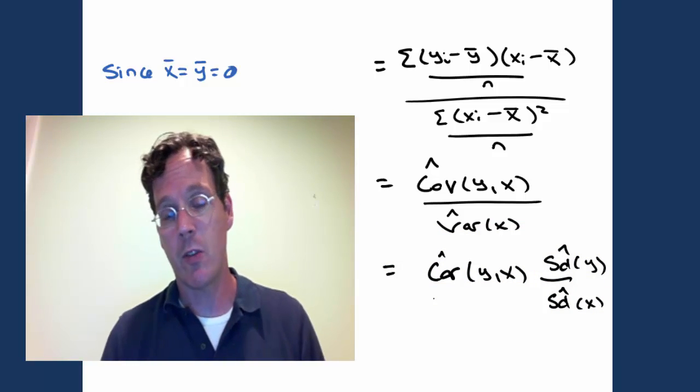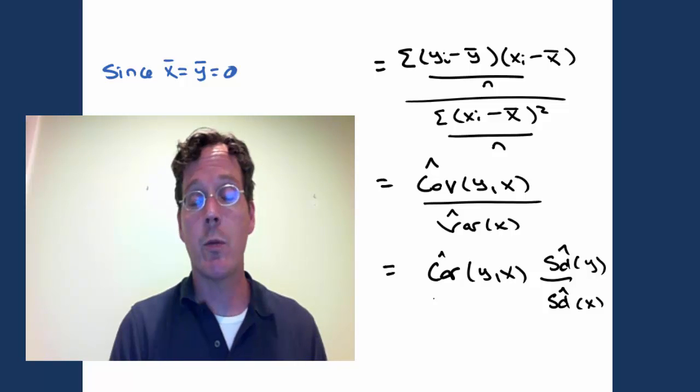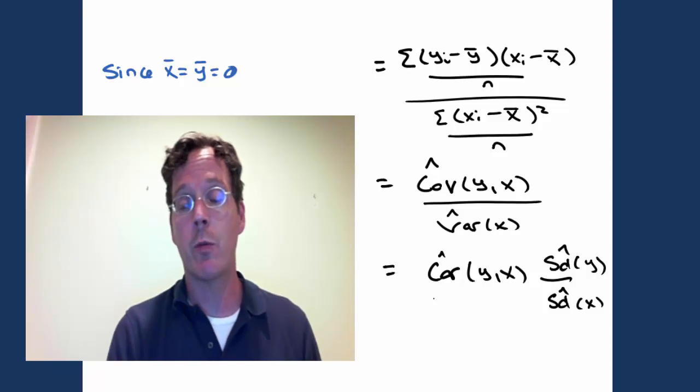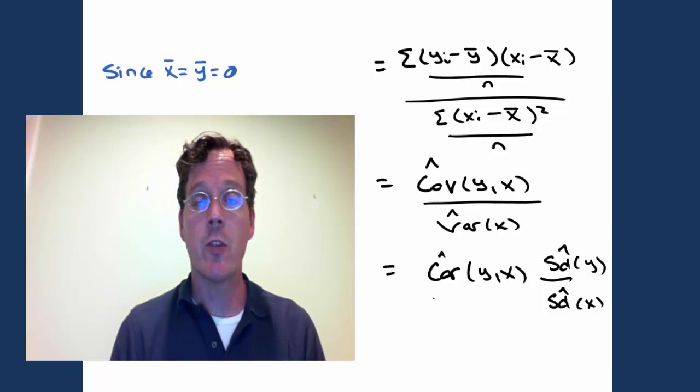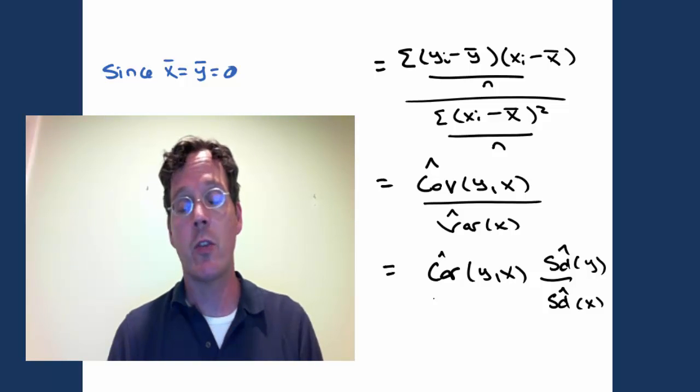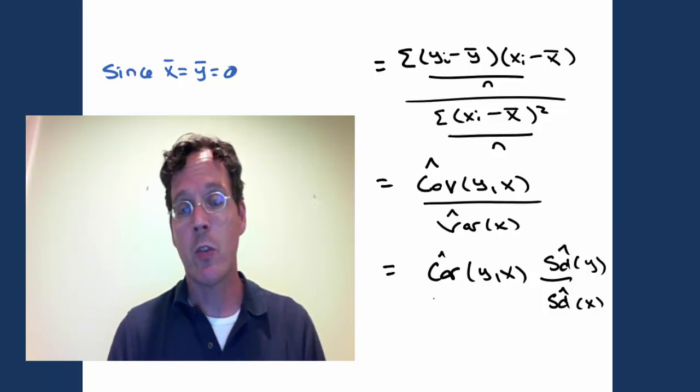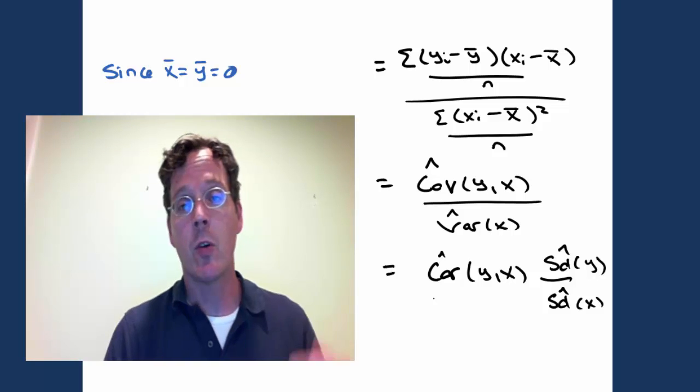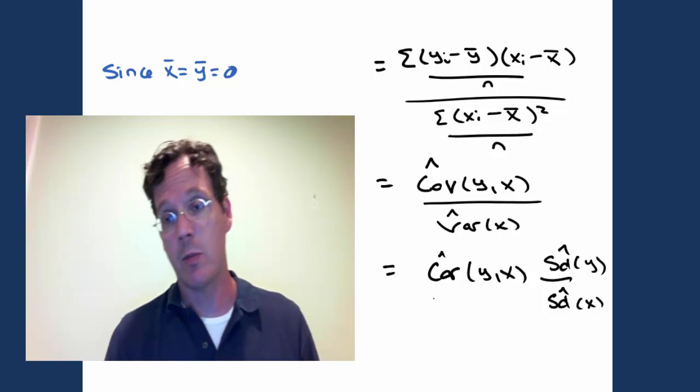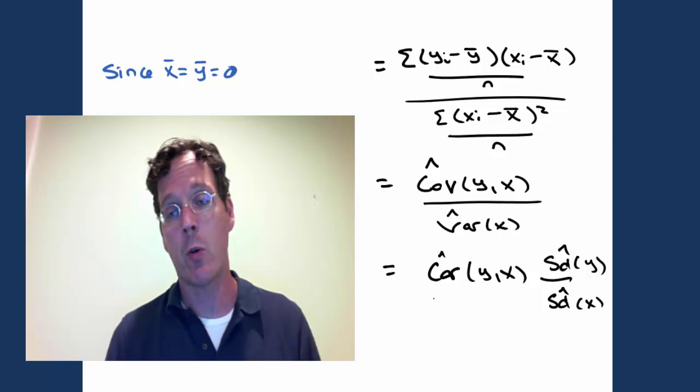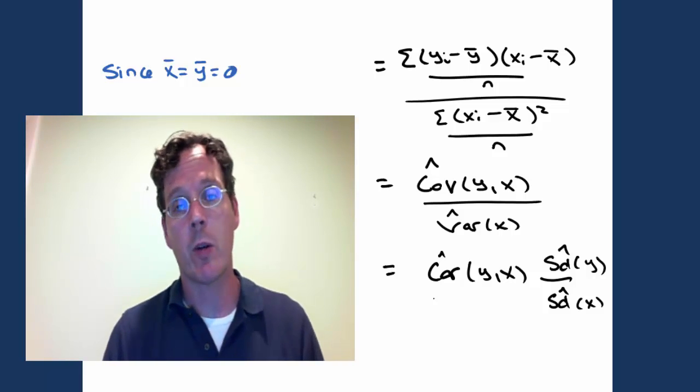Let's double-check the units. The correlation is a unit-free quantity, recall, because it's always between minus 1 and plus 1. It's a unit-free quantity. Standard deviation of y has units of y. Standard deviation of x has units of x. So this slope term has units of y divided by units of x. So it is correct because it's a slope regressing x as a predictor and y as an outcome. It's aligned with x as the horizontal part and y as the vertical part, so it has the correct units.